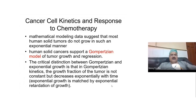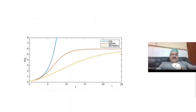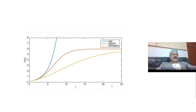Tumors follow what is called the Gompertzian model — they usually do not follow exponential or logarithmic models. There are three models: the exponential model (blue line), where cells keep increasing with time; the logistic model, which is S-shaped, where cells increase early then reach a plateau; and the Gompertzian curve, where the growth rate is less than logarithmic or exponential and never reaches a plateau.